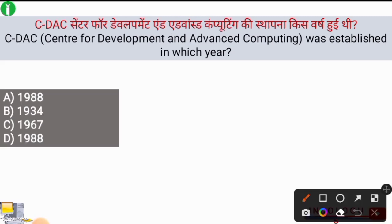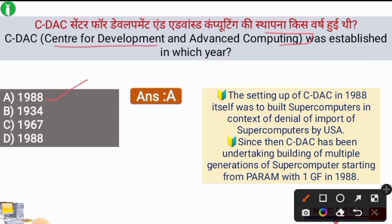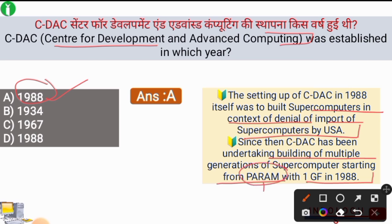Next question: CDAC, which stands for Center for Development and Advanced Computing, was established in which year? The right answer is option A, 1988. CDAC was set up in 1988 with the main motive of building supercomputers in India, in the context of denial of import of supercomputers by the USA. CDAC has undertaken building multiple generations of supercomputers, starting from Param with 1GF in 1988. The name of the first supercomputer developed in India was Param, and the name of India's first computer was Siddharth.